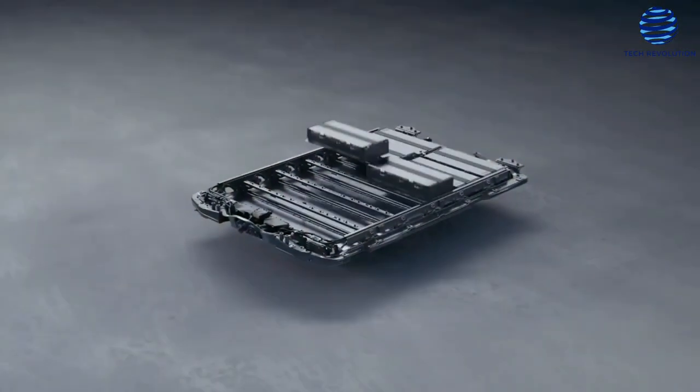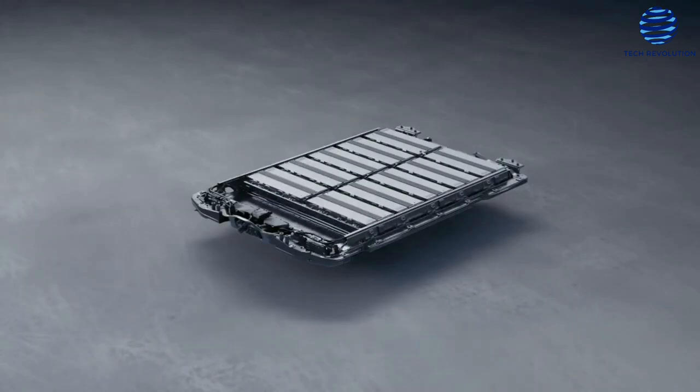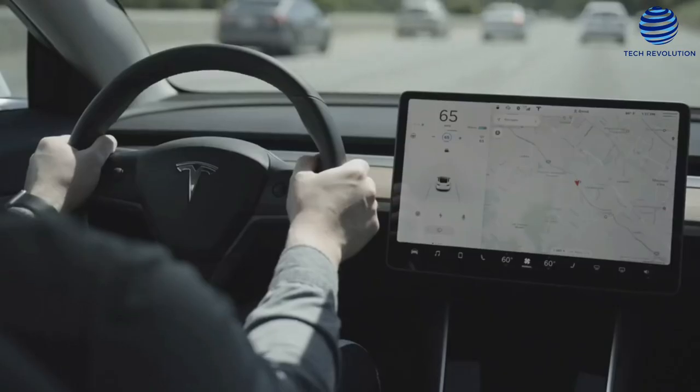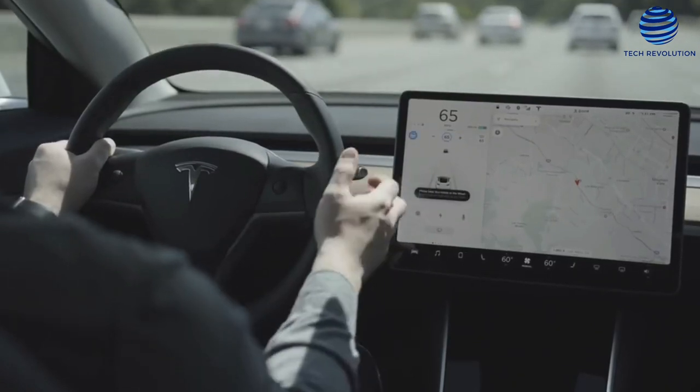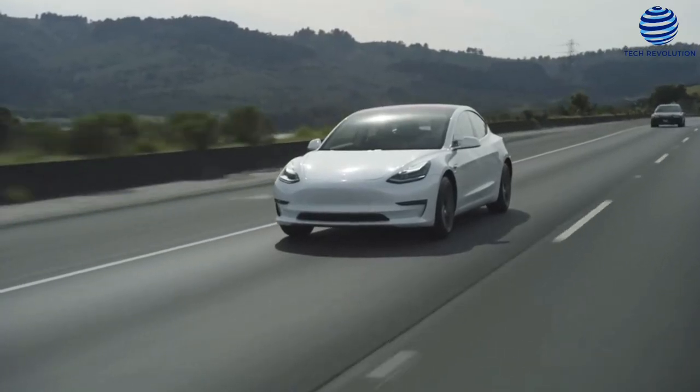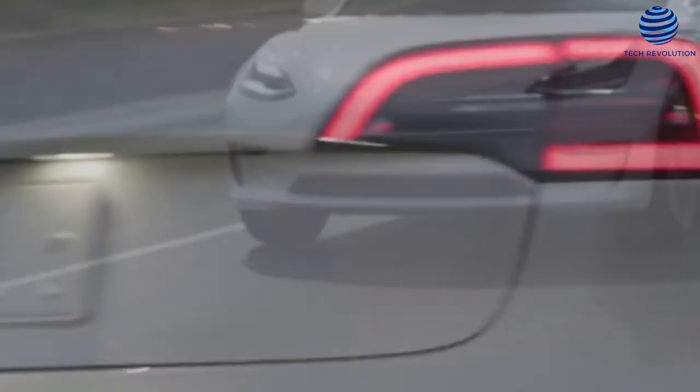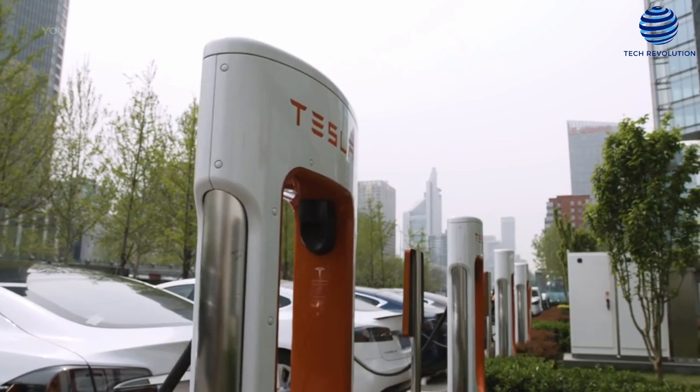According to Elon Musk, battery modules are the primary limiting factor in the life of an electric car. He stated in 2019 that the Tesla Model 3 drive unit is rated for 1 million miles, while the battery only lasts 300,000 to 500,000 miles, or around 1,500 charge cycles.